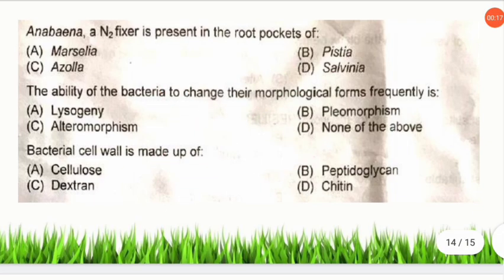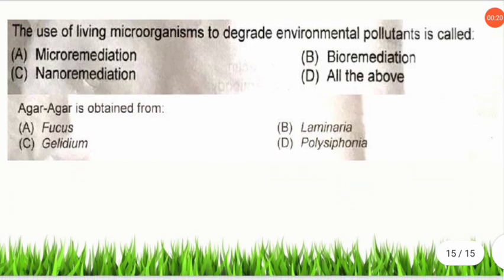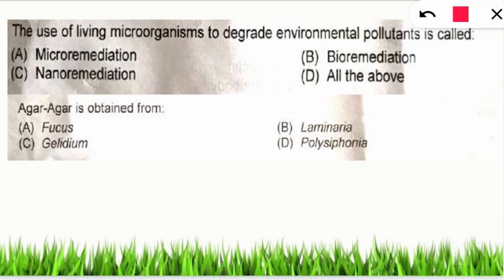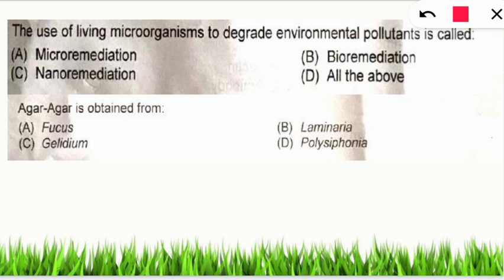Q: The use of living microorganisms to degrade environmental pollutants is called what? A: Bioremediation. If asking specifically about plants used for this purpose, it is called phytoremediation; for microorganisms, it is bioremediation.